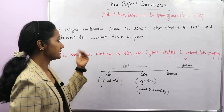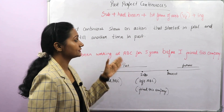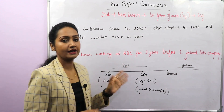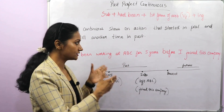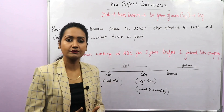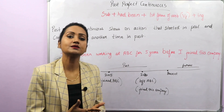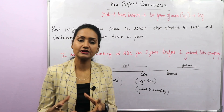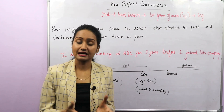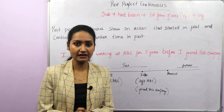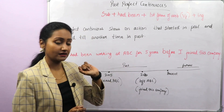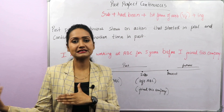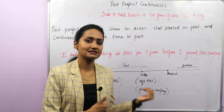Past perfect continuous shows an action that started in past and continued till another time in past. We are talking about past in past. One more tense was there where I told you that we talk about past in past — that is past perfect. And then in past perfect continuous, again we talk about past in past.